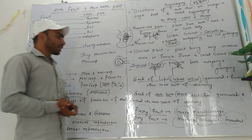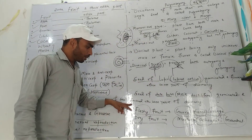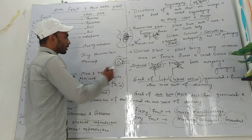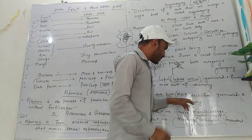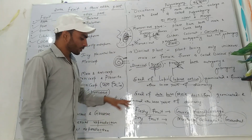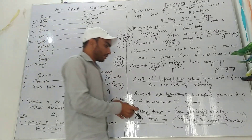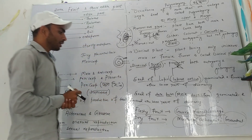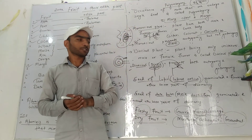The next is Fleshy Fruit and Dry Fruit. Fleshy fruit — pericarp is soft. Examples: Guava, Amrood, Mango, Aam, Orange. The next is Dry Fruit — pericarp is hard and dry. Examples: Mustard, Cashew Nut, Ground Nut. These are all dry fruits. The next class will continue.